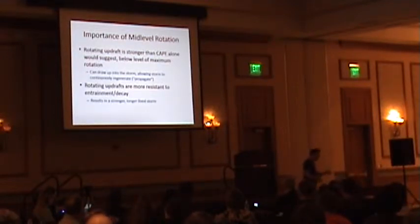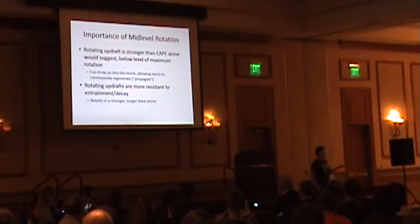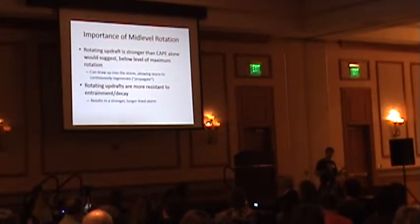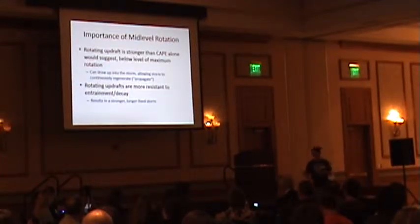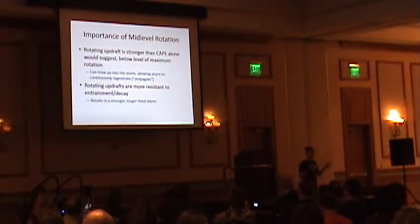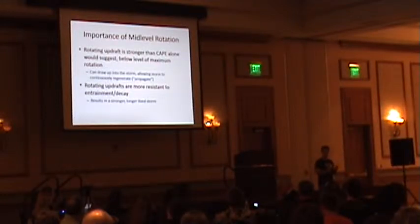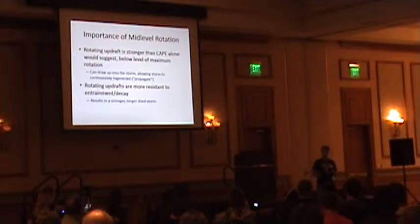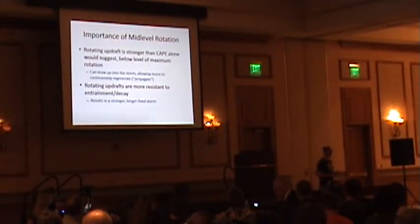Another point: rotating updrafts are more resistant to decay. They don't draw in as much environmental air, so they shelter a little bit better - that gives you a longer-lived storm. So we've got a storm that tends to persist longer, reproduces itself continuously, and the updraft is stronger - especially in the low levels. That becomes critical when we talk about tornado genesis.